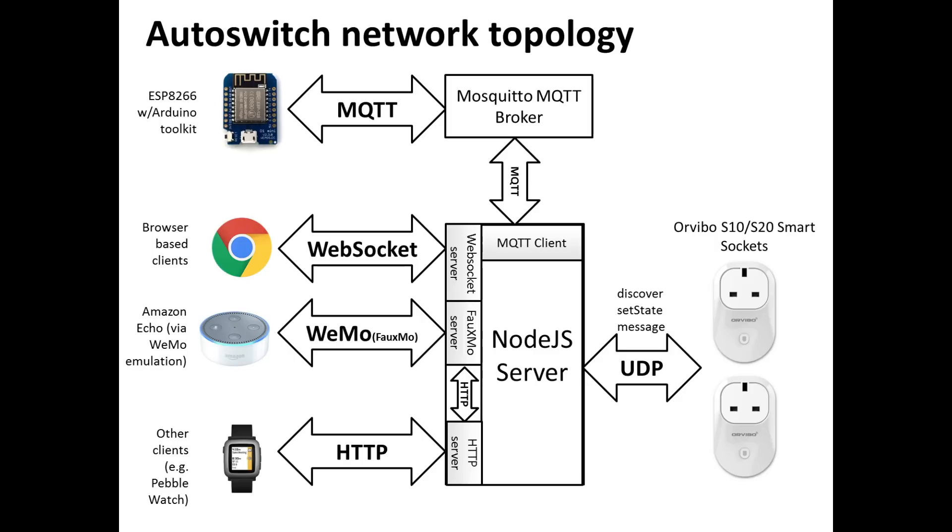So let's start on the right hand side. So we have Orvibo S10 and S20 smart sockets. These are sockets that I use throughout the house. They're cheap Wi-Fi switches, about 10 to 20 pounds on Amazon and they're pretty reliable. So I'll stick to using them in the future. These communicate via UDP to a Node.js server that runs on a Linux box that is running 24-7 within the house.